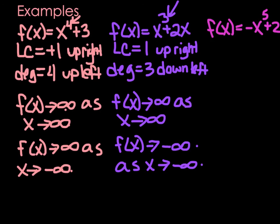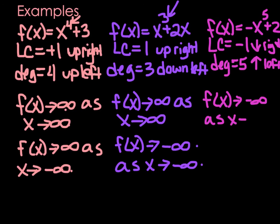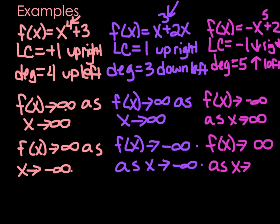One more: f of x equals negative x to the fifth plus 2. Leading coefficient is negative 1 — that means it goes down on the right. Degree is 5, which is odd — opposite — so it goes up on the left. f of x approaches negative infinity as x approaches positive infinity, and f of x approaches positive infinity as x approaches negative infinity. So: down right, up left.